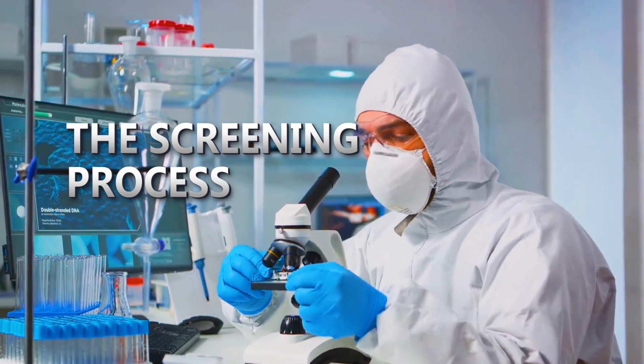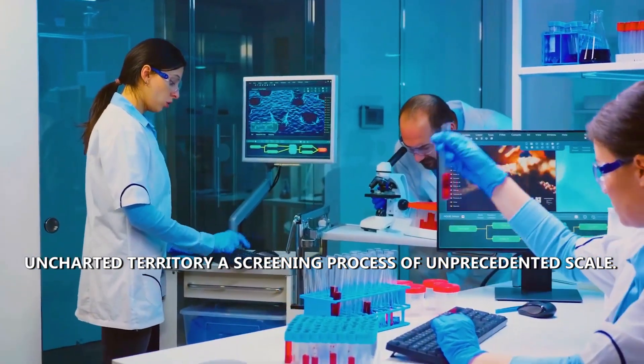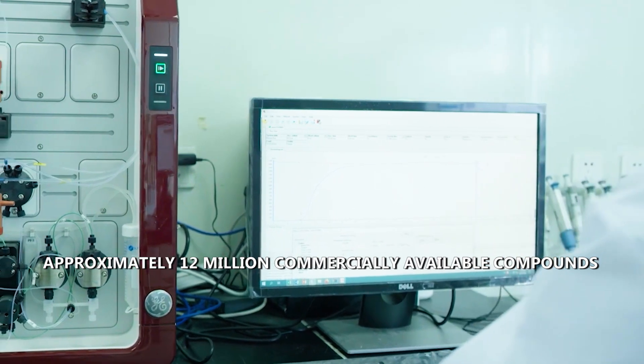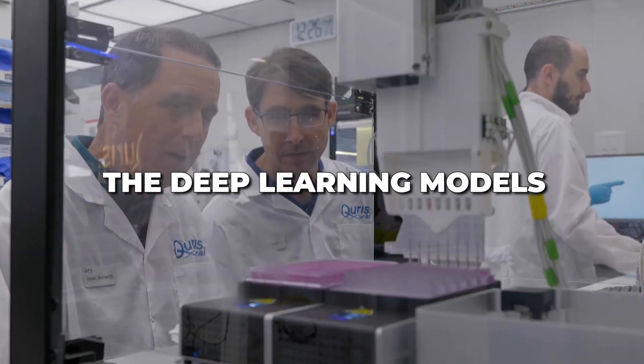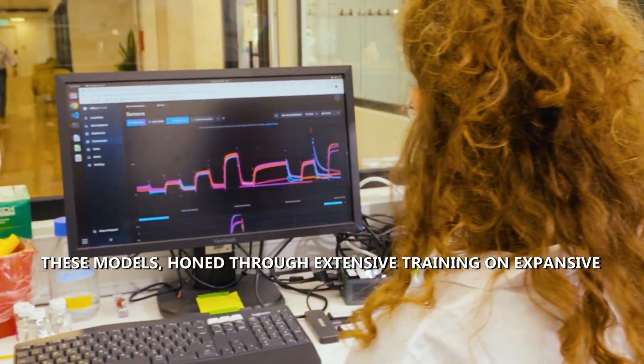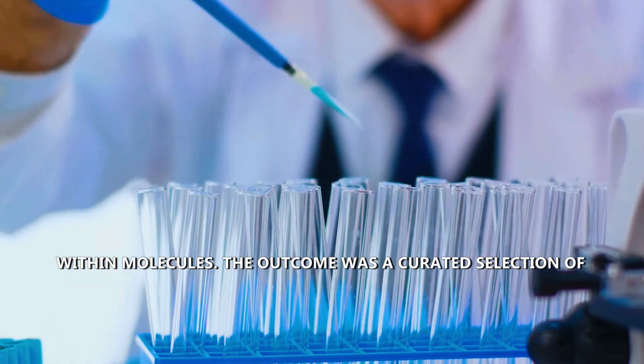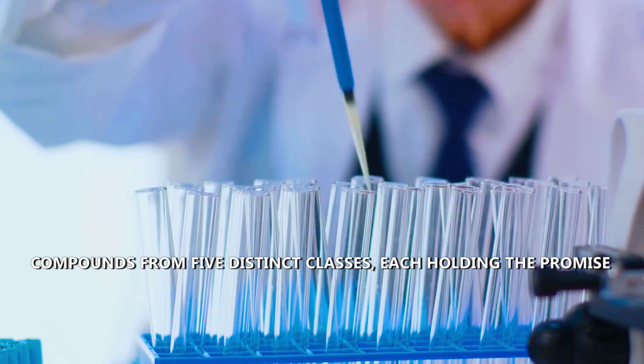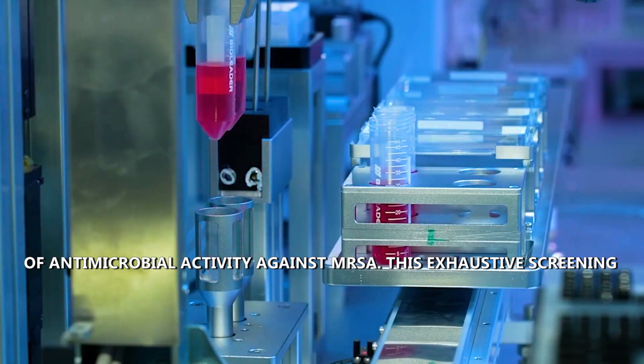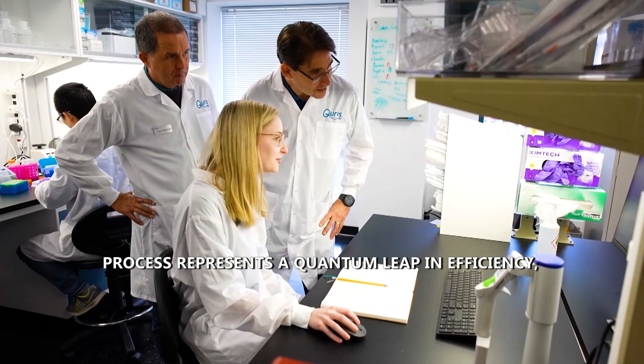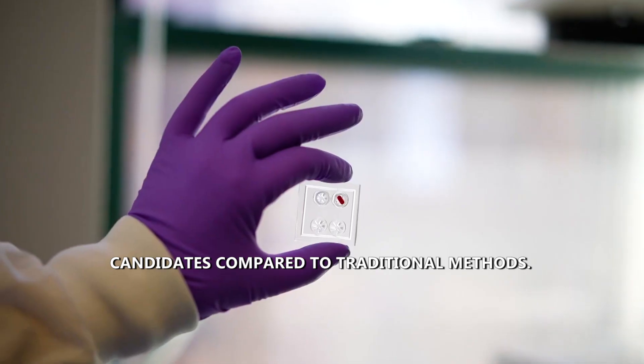The screening process. The quest for novel antibiotics led the researchers into uncharted territory, a screening process of unprecedented scale. Approximately 12 million commercially available compounds underwent rigorous evaluation by the deep learning models. These models, honed through extensive training on expansive datasets, meticulously analyzed the chemical substructures within molecules. The outcome was a curated selection of compounds from five distinct classes, each holding the promise of antimicrobial activity against MRSA. This exhaustive screening process represents a quantum leap in efficiency, vastly accelerating the identification of potential drug candidates compared to traditional methods.